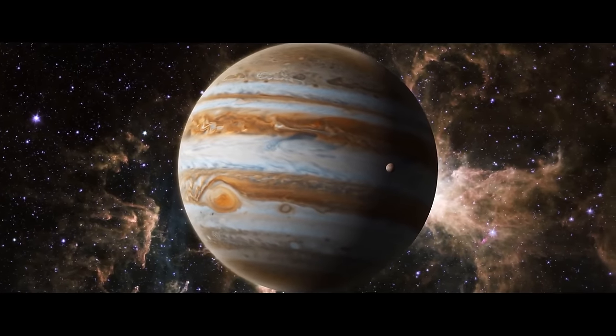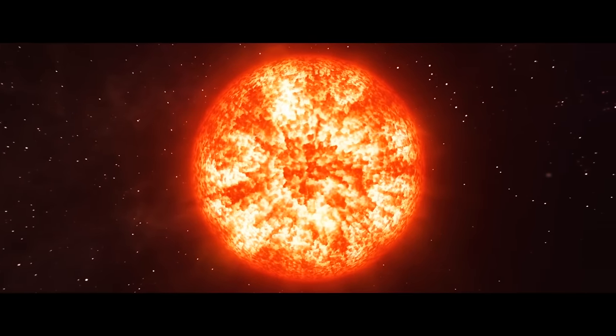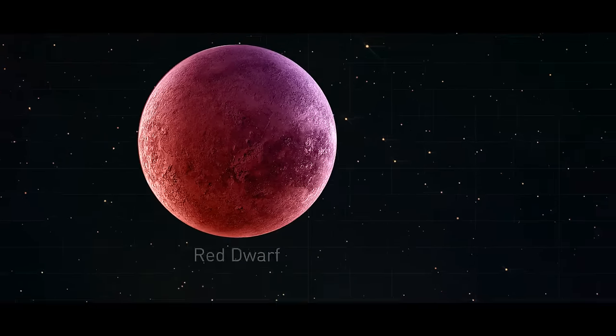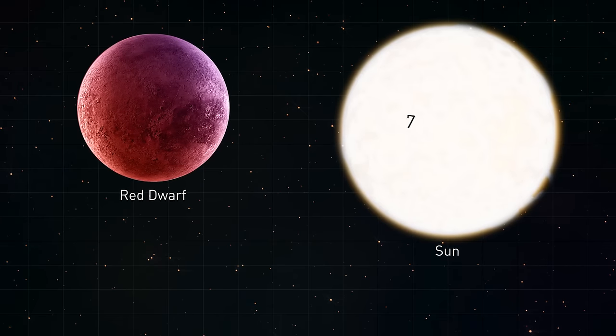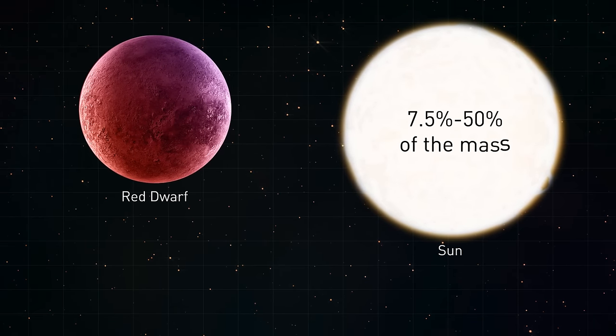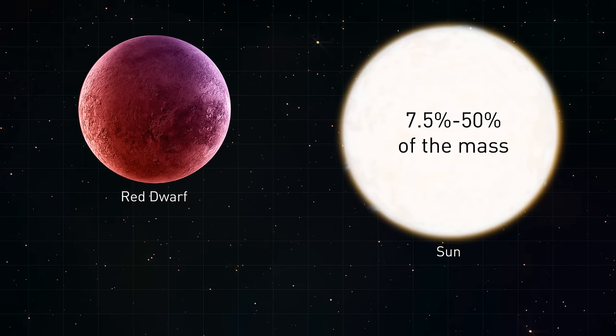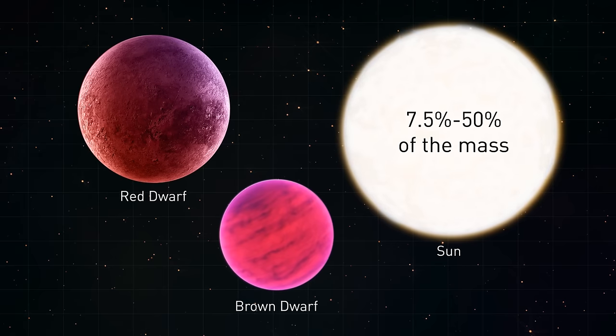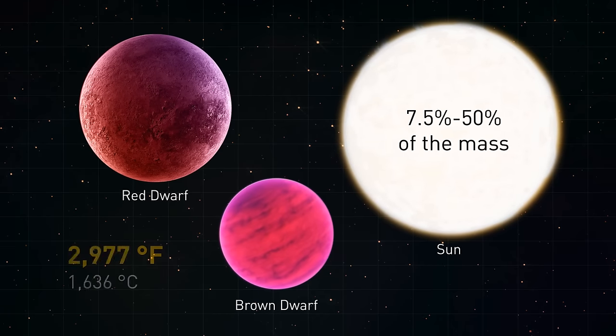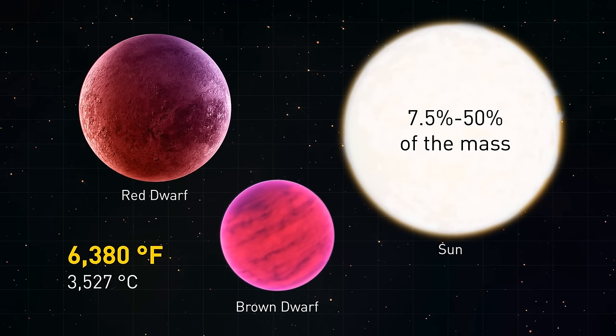So let's imagine that it's happened, and Jupiter has become a real star. For example, a red dwarf. Red dwarfs are stars with masses around 7.5% to 50% of the mass of our Sun. Red dwarfs are also hotter than brown dwarfs. Their temperature can reach 6,380 degrees Fahrenheit.